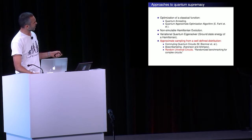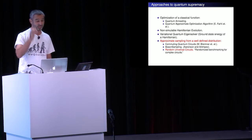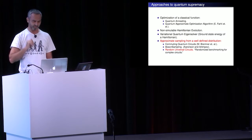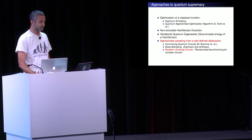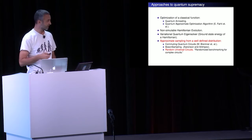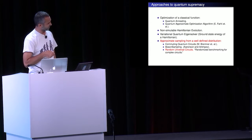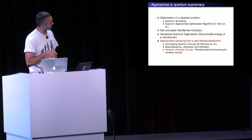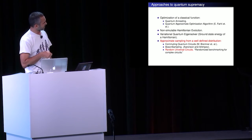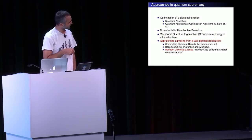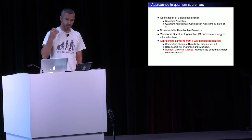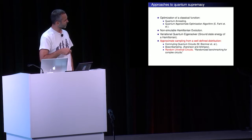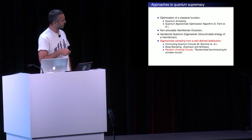There is also non-simulable Hamiltonian evolution, which is popular in ion traps for instance. The variational quantum eigensolver — basically the task of this algorithm will be to find the ground state energy of a Hamiltonian, like a Fermi-Hubbard model of some molecule. And the algorithms I'm going to be talking about are sampling algorithms. The computational task here is going to be to sample from a well-defined distribution. Examples of this in the literature include commuting quantum circuits by Mike Bremner and collaborators, and boson sampling by Aaronson and Arkhipov. We're going to be thinking about sampling the distribution defined by the output of a random universal circuit.